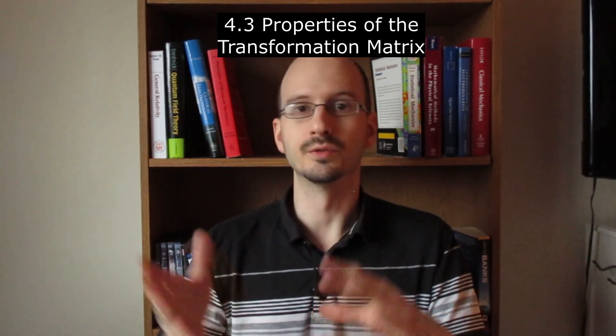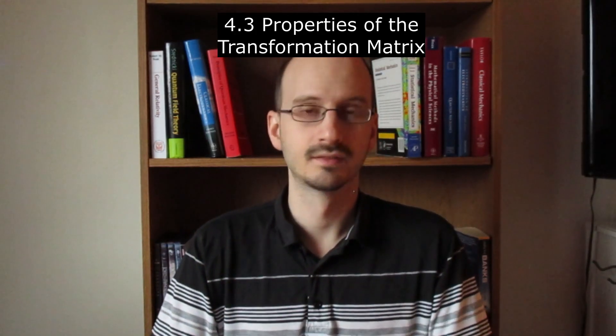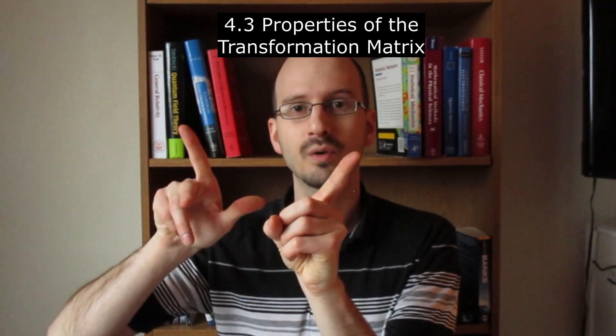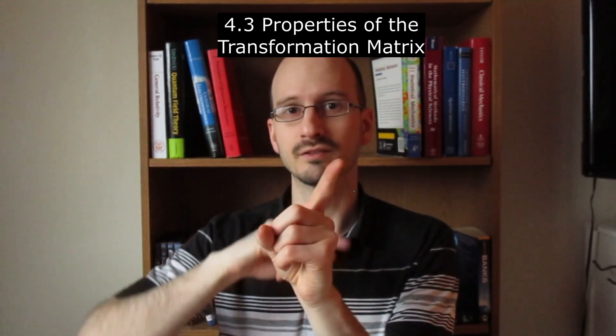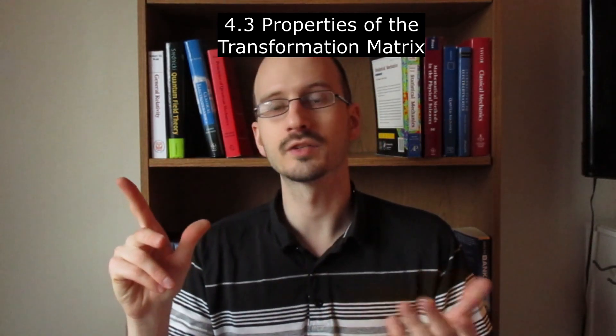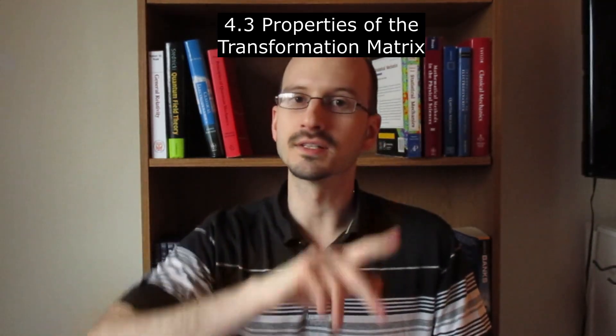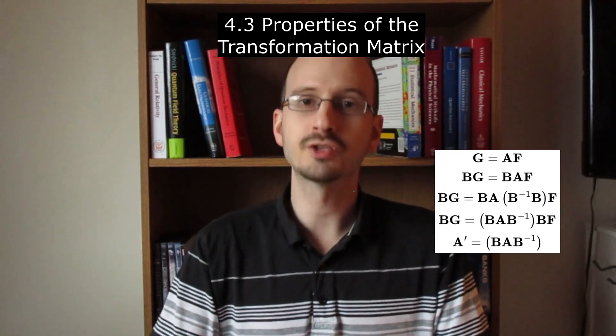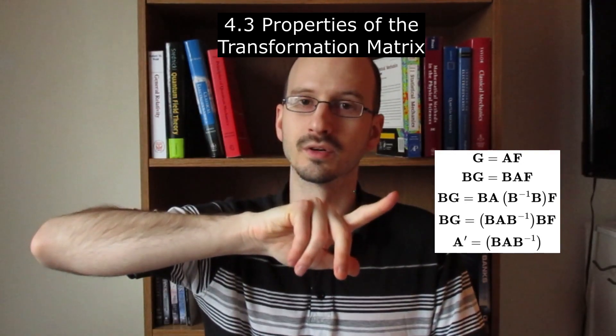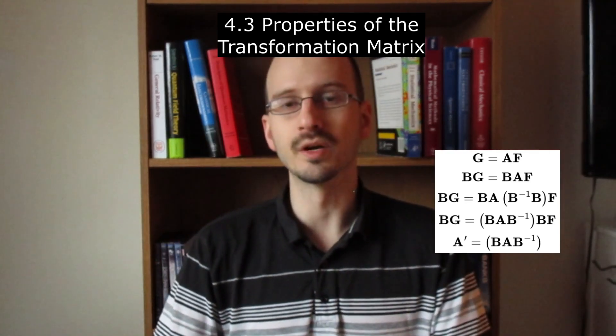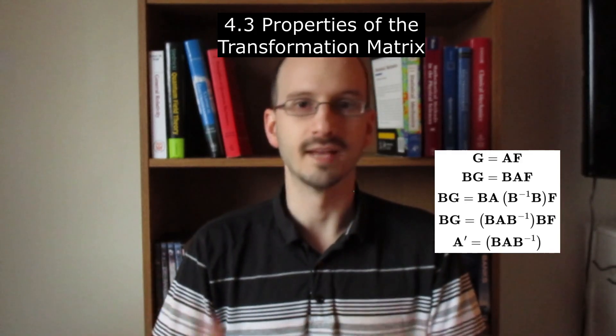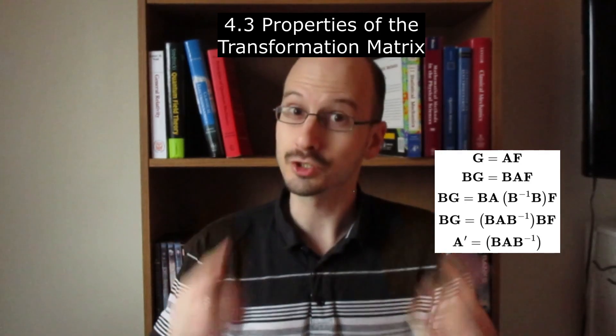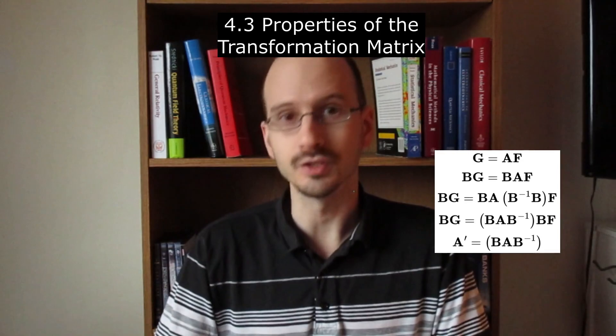Now suppose we want to represent the same transformation in a different basis. Okay, what does that mean? For example, we might want to represent the rotation of a vector in the space coordinates or that same rotation of a vector in the body coordinates. In the space coordinates that transformation is called A, and in the body coordinates that transformation would be called A'. If A is the rotation in the space coordinates and B is the rotation between the space coordinates and the body coordinates, then with the help of a bunch of algebra we can find an expression for A' in terms of A and B, and it looks like this. This might seem like random information, but I assure you it comes up later, especially in quantum mechanics.